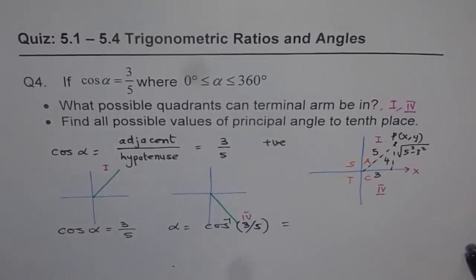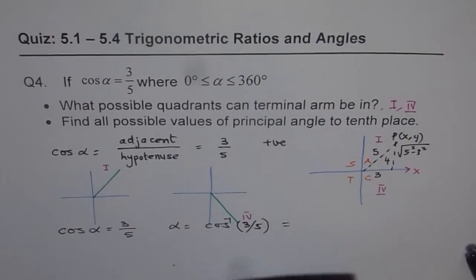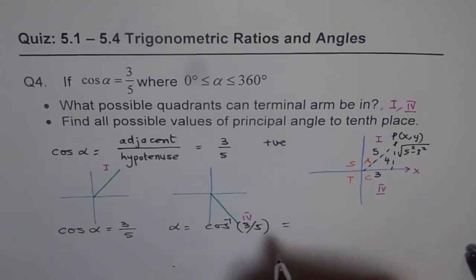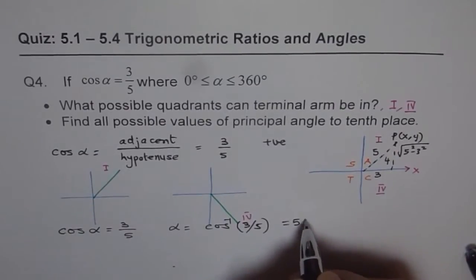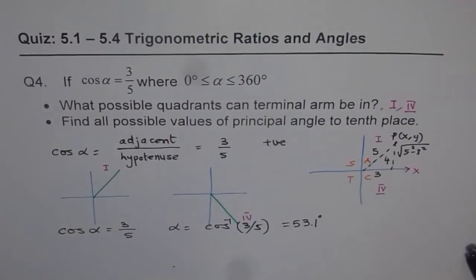So we can use the calculator and calculate this. So we get cosine inverse, second function, cosine inverse, open the brackets, 3 divided by 5, bracket close, equals to 53.13 degrees, right? So the related acute angle is 53.13 degrees, which will round to tenth place, that means 53.1 degrees. So that is the value of alpha.